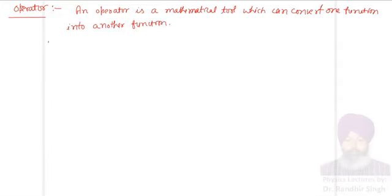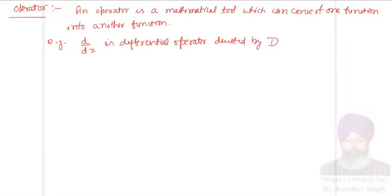For example, d upon dx is a differential operator. It is mostly denoted by capital D. So, capital D equals d by dx. It is differentiation with respect to x. WRT stands for with respect.